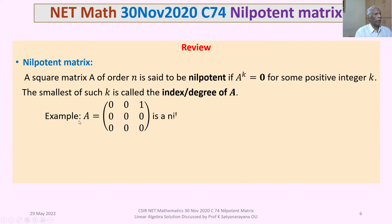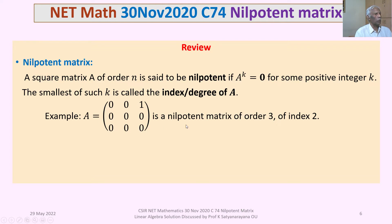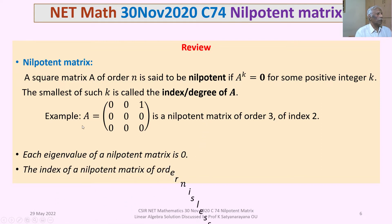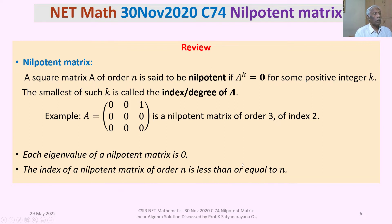An example of a 3×3 nilpotent matrix of index 2 is A = [[0,0,1],[0,0,0],[0,0,0]]. We use two key results on nilpotent matrices: first, each eigenvalue of a nilpotent matrix is 0; and second, the index of a nilpotent matrix of order n is always less than or equal to n.